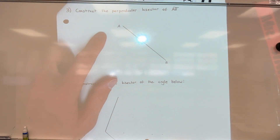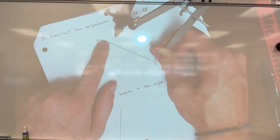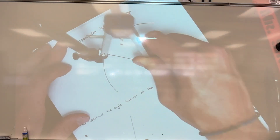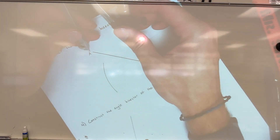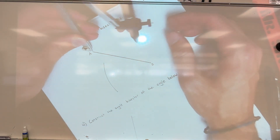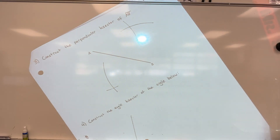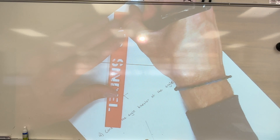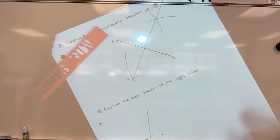Number three: perpendicular bisector. Make sure your compass is set to more than halfway. Make a tick mark in the empty space above, then move the metal tip from B to A — being very precise with placement — and make intersections above and below. Connect the two intersections with a straight edge and there's your perpendicular bisector.